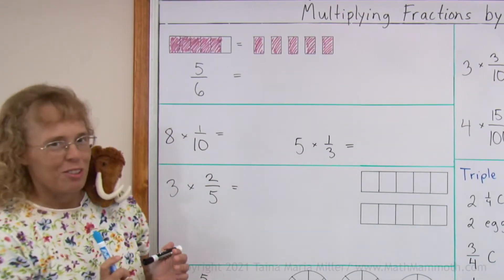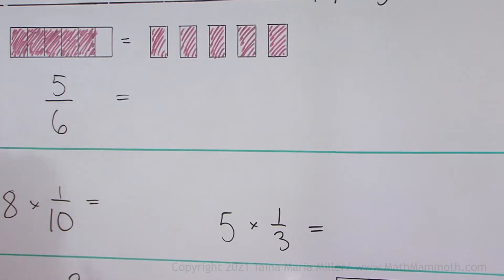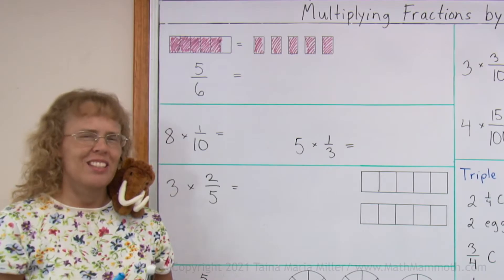First I have a really easy picture for you. This is 5 sixths. And if I take those 5 sixths apart and I draw them like this, like 1 sixth, 1 sixth and so on, then I have 5 copies of 1 sixth. That's really easy.